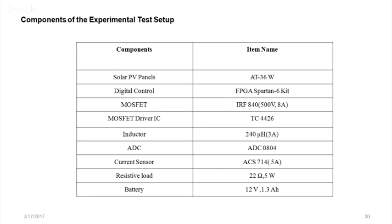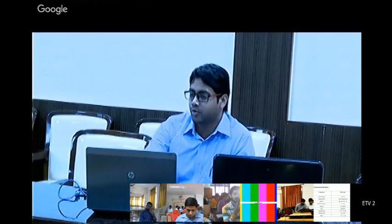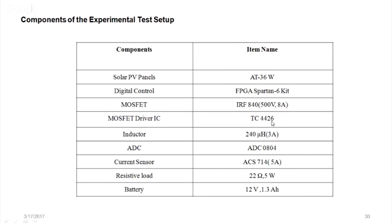The inductor used is 240 µH, 3A, available commercially. Since FPGA has no inbuilt ADC (unlike Arduino which has inbuilt ADC), an external ADC0804 (successive approximation type, 8-bit) is used to interface analog signals with the FPGA board. The current sensor used is ACS714 (5A rating, from NAS Robotics), which is a Hall-effect linear sensor producing 2.5V at 0A and increasing linearly with current.